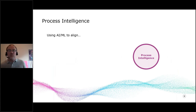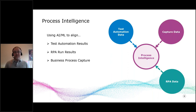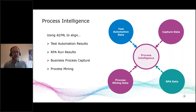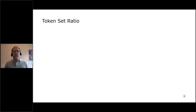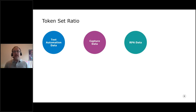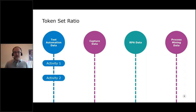Let's cover how process intelligence uses AI and ML to align test automation results from certify, RPA run results from orchestrator, step-by-step task data from capture, and process mining data. This alignment is facilitated by two AI algorithms: the token set ratio and Levenshtein distance. When we process the four sets of process data — test automation, capture data, RPA data, and process mining data — each source has its own business process flow within it, and each flow contains at least one activity. Unfortunately, not all data sources use the same activity naming strategy.